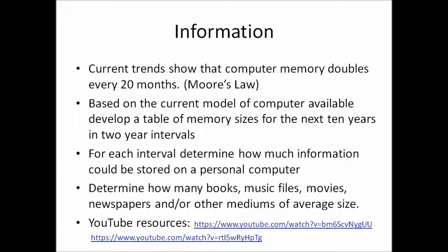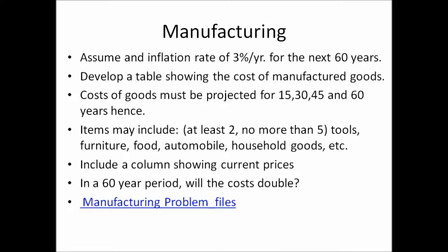In the Manufacturing Problem category, assume an inflation rate of 3% per year for the next 60 years. Develop a table showing the cost of manufactured goods. Costs of goods must be projected for 15, 30, 45, and 60 years hence. Items may include at least two or no more than five — such as tools, furniture, food, automobile, household goods, etc. Include a column showing current prices. Check the manufacturing problem files that are provided for you.